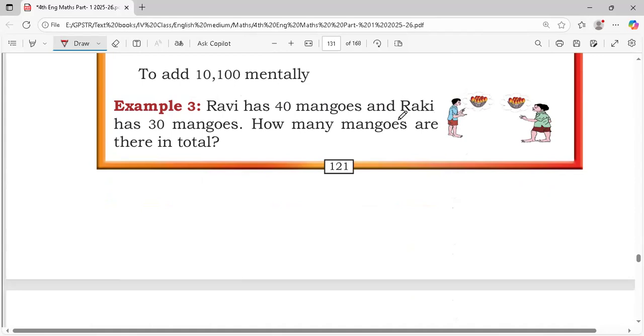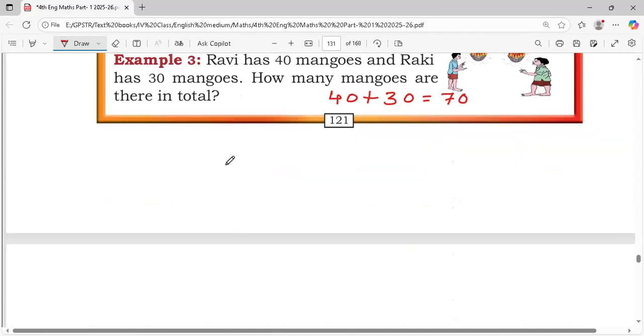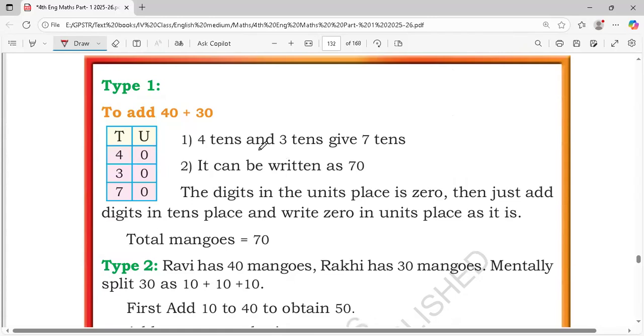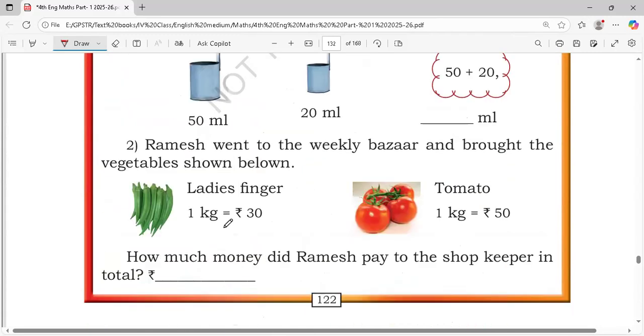Third one. Ravi has 40 mangoes and Raki has 30 mangoes. How many mangoes are there in total? Just add 40 plus 10, 50. Remaining 20. That means 40 plus 30, it gives 70. There are total 70 mangoes. They are doing like this. U means unit digit. T means 10 digits.